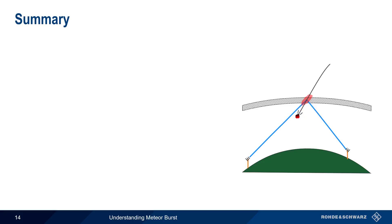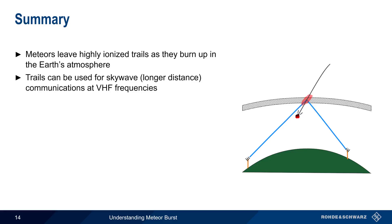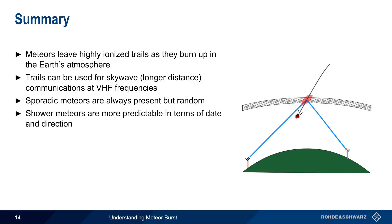Let's end with a brief summary. Meteors leave highly ionized trails as they burn up in the Earth's atmosphere. These trails can be used to reflect VHF signals and enable skywave communications over longer distances. Meteors can be grouped into two general categories. Sporadic meteors enter the atmosphere constantly, but from essentially random directions. Meteor showers occur periodically throughout the year and lead to much larger numbers of meteors, with these shower meteors appearing from predictable locations or radiance in the sky.